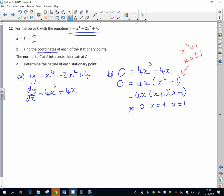Substitute each of those values back into the equation for y to find the full coordinates. So if I substitute 0 in, I get 4. If I substitute minus 1 in, I get a value of 3. And if I substitute 1 in, I also get a value of 3. So those are my three stationary points.